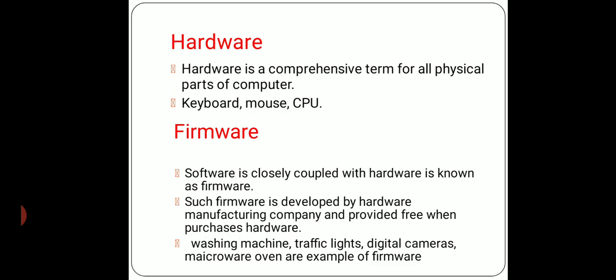Such firmware is developed by the hardware manufacturing company and provided free when purchasing hardware. Washing machine, traffic light, digital camera, microwave oven are examples of firmware. Traffic lights also have programming inside — after a certain time the signal will change; that is not done manually, the program is already fitted inside. So today we looked at software, hardware, and firmware. Here our chapter finishes.